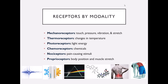Some of these receptor types will be covered in later chapters as part of our special senses. Here in Exercise 22 we're going to focus on mechanoreceptors, thermoreceptors, nociceptors, and proprioceptors — so we'll talk about cutaneous receptors and some internal receptors as well, since this is general sensation. We'll talk about photoreceptors when we get to vision.